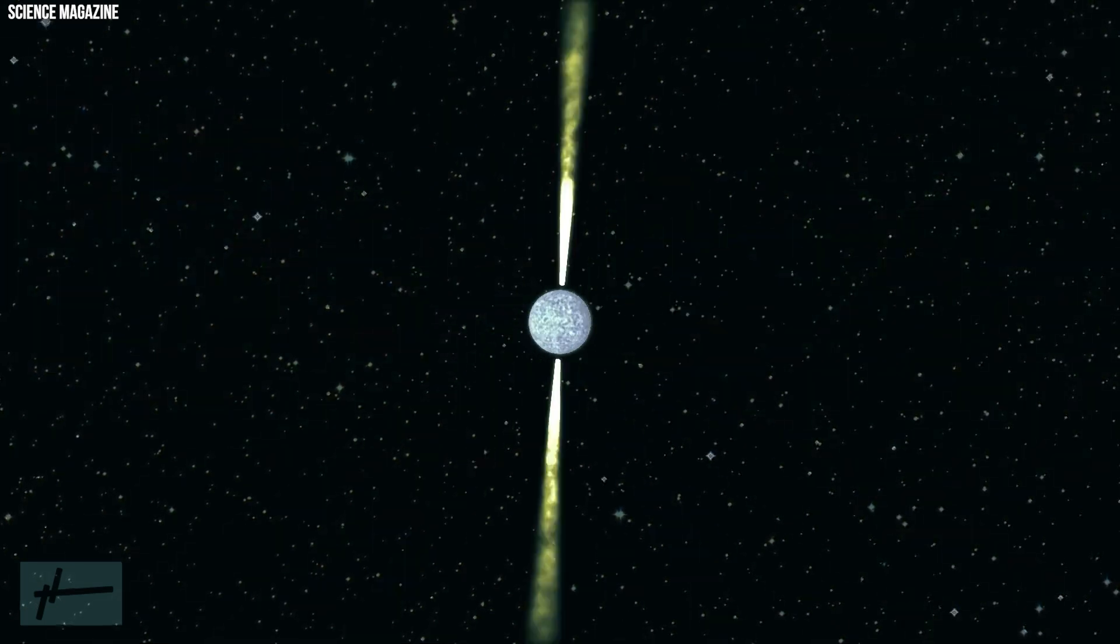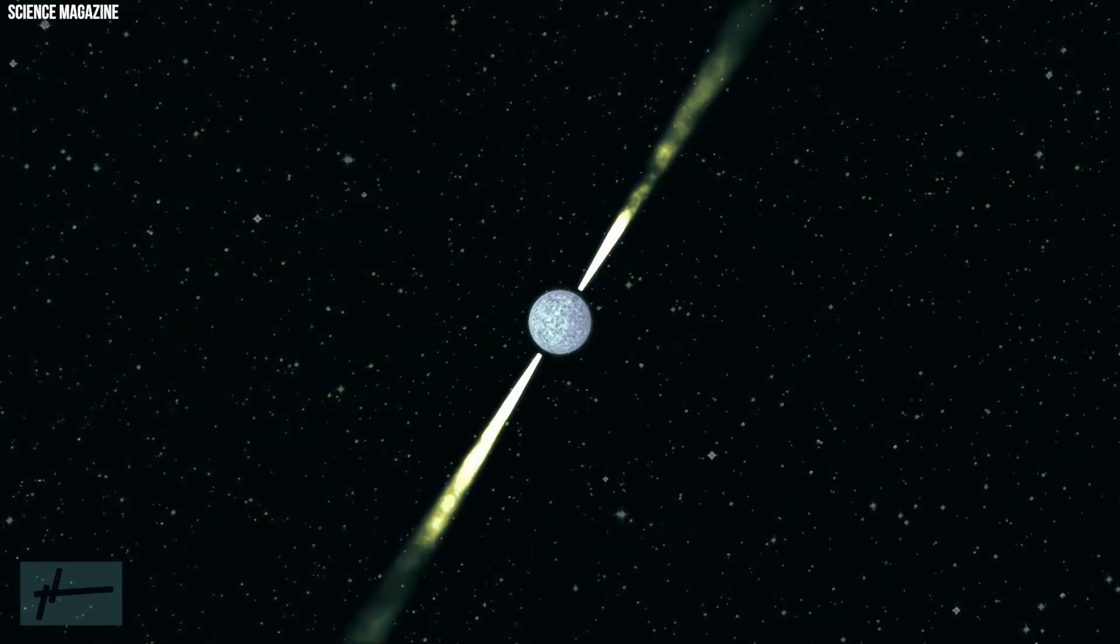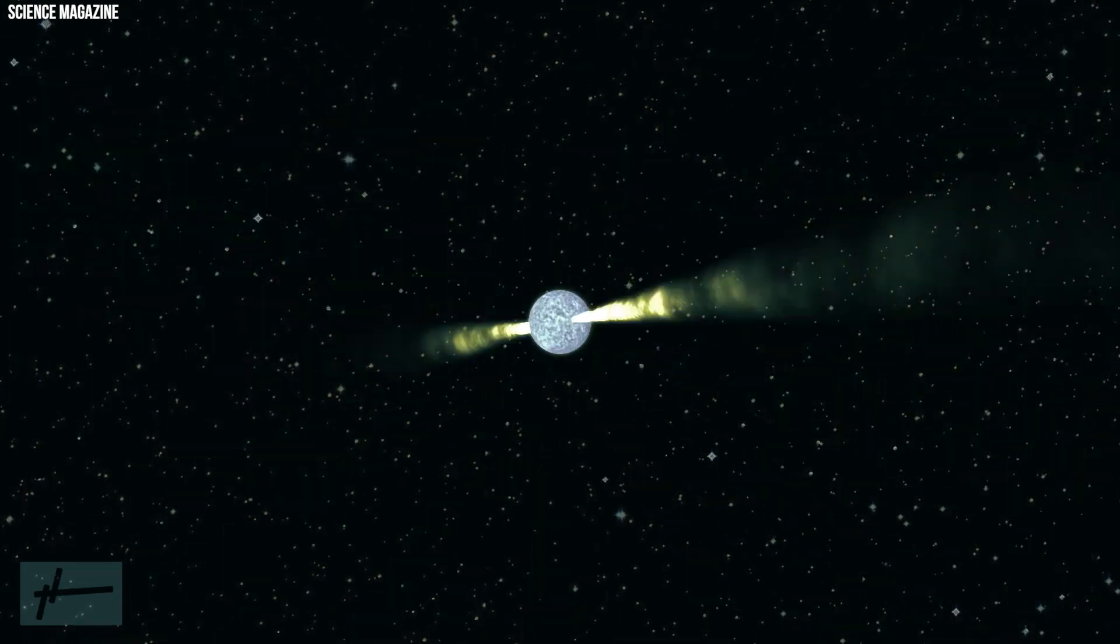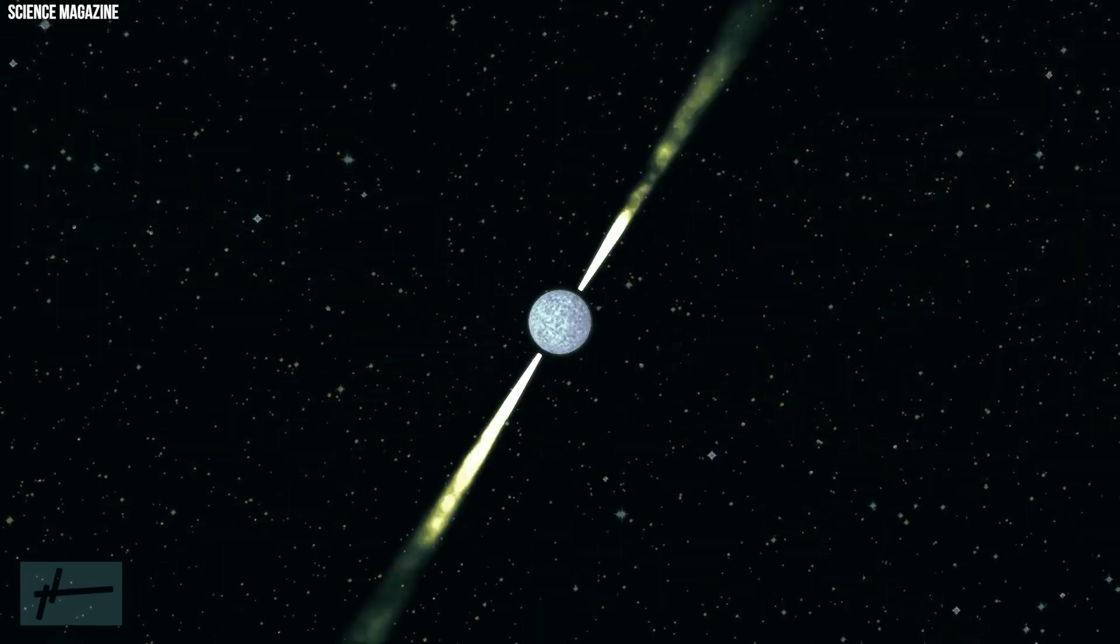The stellar core contracts to the point that neutron stars, with a mass ranging from that of the sun to twice our star's mass, are compressed into a body no wider than an average city on Earth.